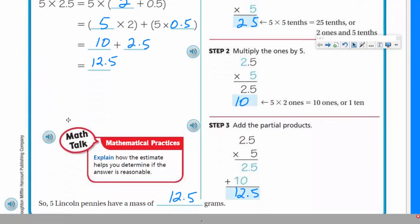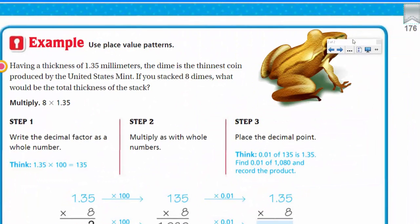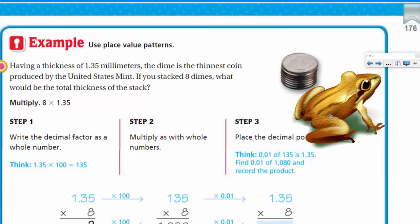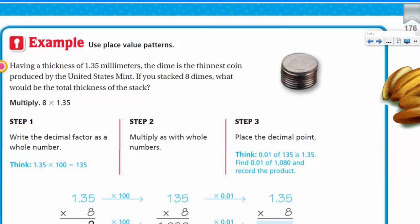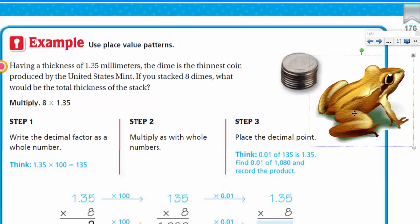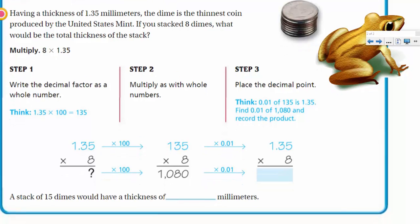But time to move on to the next page. Should we bring the frog with us? Come on, Froggy. There he is. Froggy's back. Now it says use place value patterns. This is having a thickness of 1.35 millimeters. The dime is the thinnest coin produced by the United States Mint. If you stacked eight dimes, what would be the total thickness of the stack? Okay. You know, that's a great question here. I'm just usually they have a picture that goes with all this, don't they? I mean, usually when they have a problem, they usually have a picture. Oh, it's a frog. You're trying to walk off with the money. Hey. Hey. You were hiding the dimes. Nice try, pal. Oh, man. I should take you off the screen. Oh, look, he just bounced back. Oh, that's right. You could just jump. You're a frog. Okay. Anyway, let's get serious. 8 times 1.35. Step one. Write the decimal factor as a whole number. Okay. And that was done here, 135.